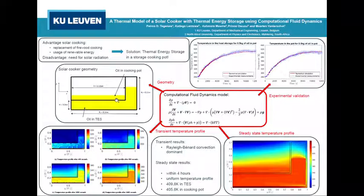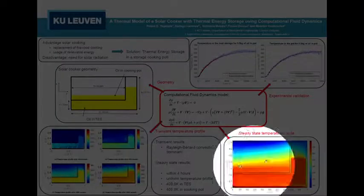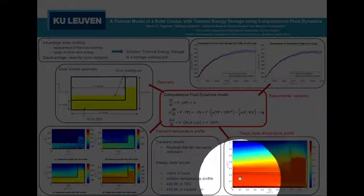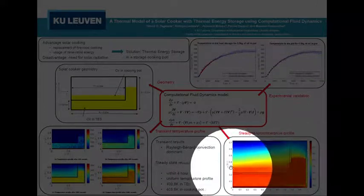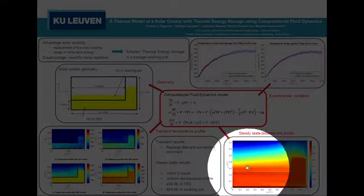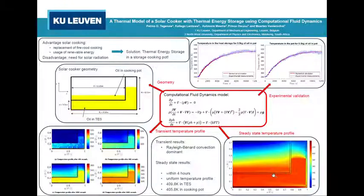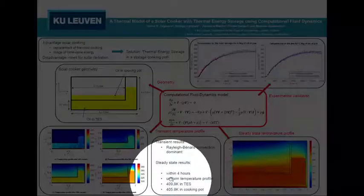If you look at the steady state situation where we have the equilibrium temperature profile, you can see that both the temperature within the cooking pot and in the thermal energy storage systems are quite uniform. And this steady state temperature is reached within four hours.